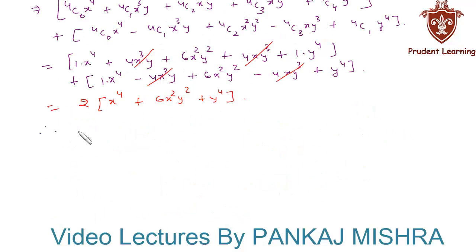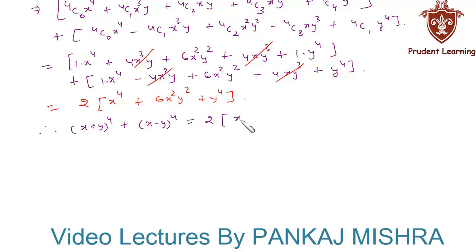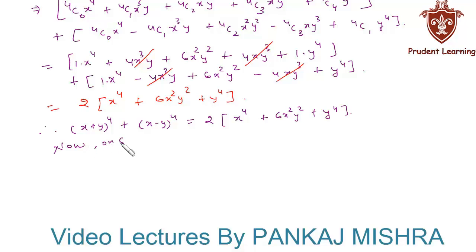Therefore, (x + y)⁴ + (x - y)⁴ equals 2(x⁴ + 6x²y² + y⁴).